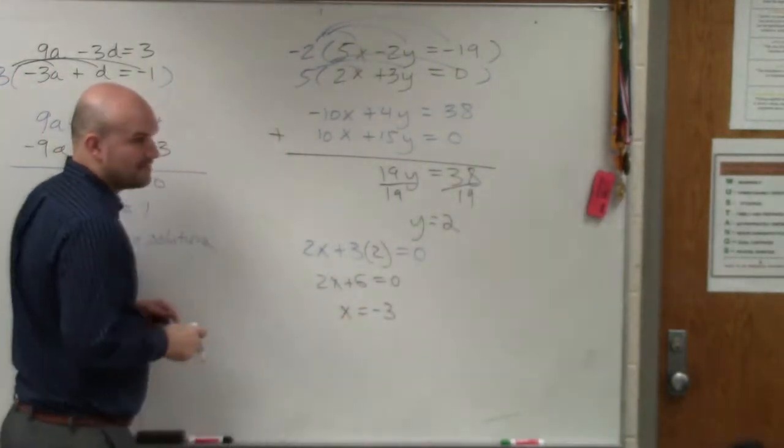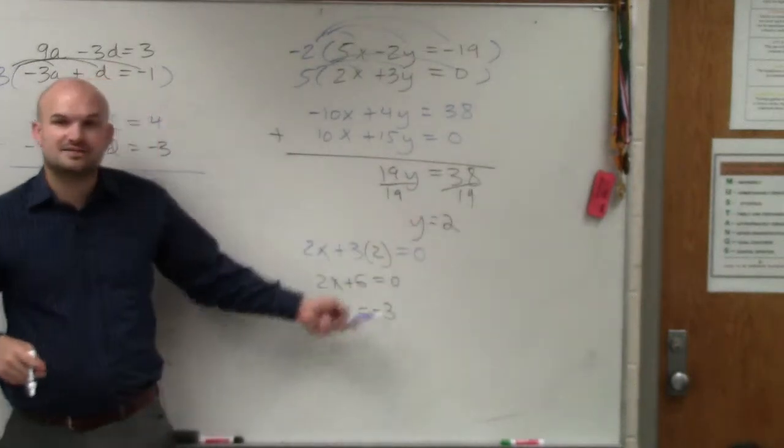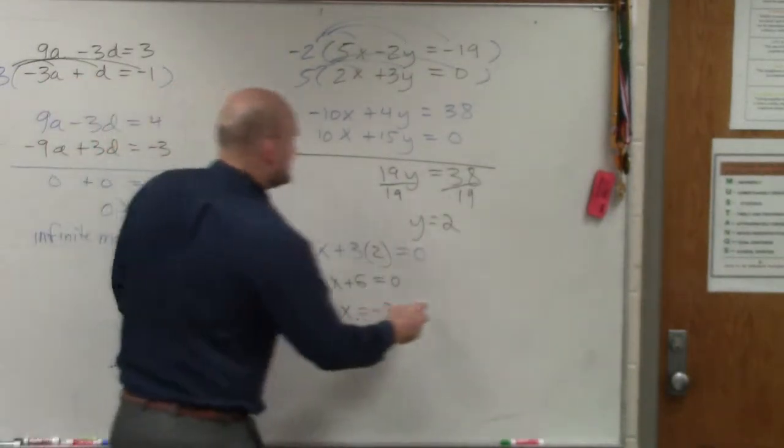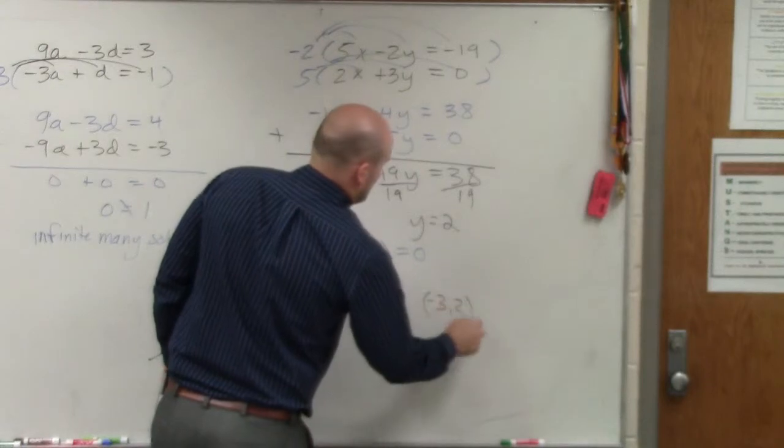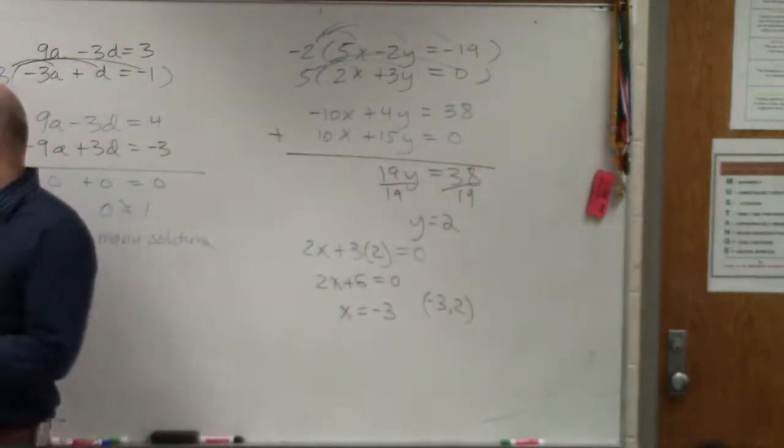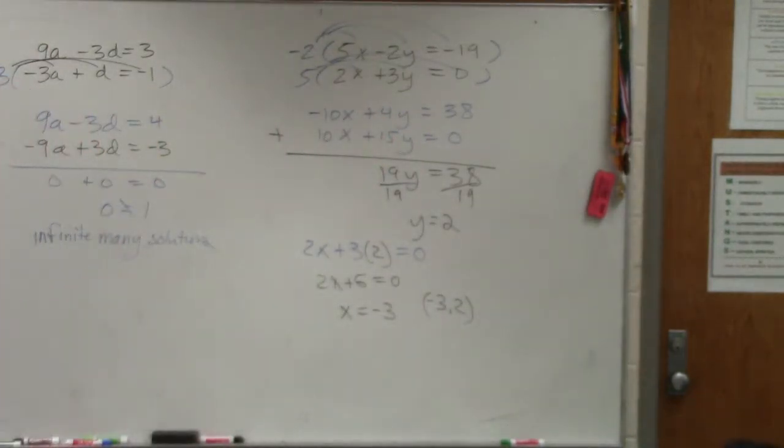So x would equal negative 3. Here, we're dealing with x and y, so we could write these as a coordinate point. Sometimes when you're dealing with different variables, you don't know which one's independent, which one's dependent, so you can just give the two solutions. All right.